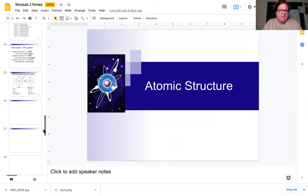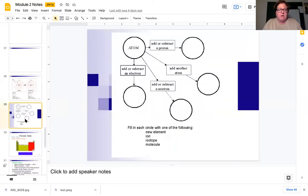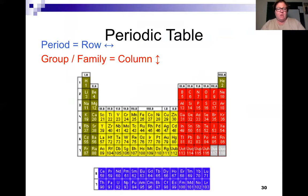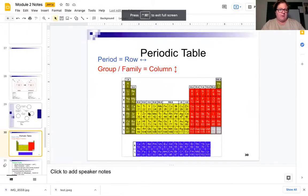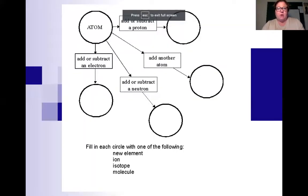Okay, as a review from last time, we learned that if you add or subtract a proton, you get a new element. If you add another atom, you get a molecule. We're going to talk about that today. We learned if you add or subtract a neutron, you get an isotope. And if you add or subtract an electron, you get an ion. So today's lesson is a little bit about the periodic table, and then we're going to talk about this fourth bubble that wasn't here last Wednesday, the one that says add another atom. So we're going to talk about what happens when you add another atom.